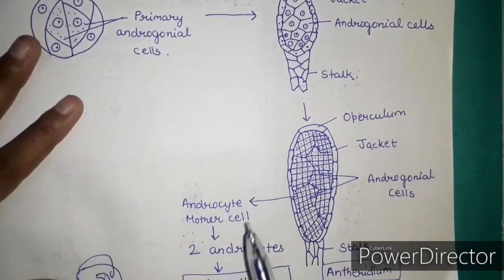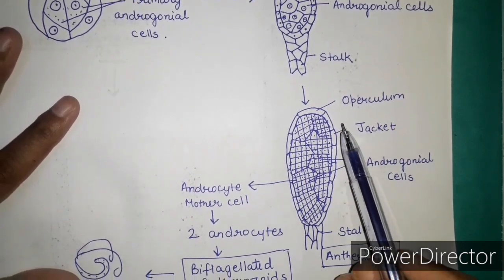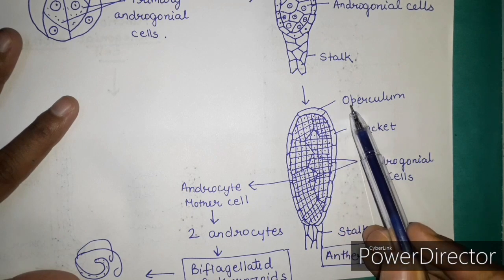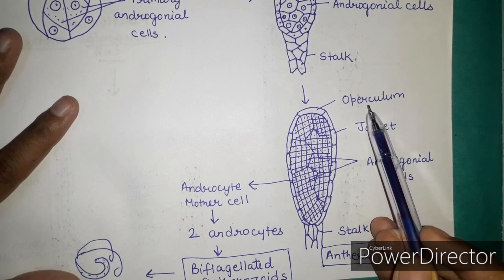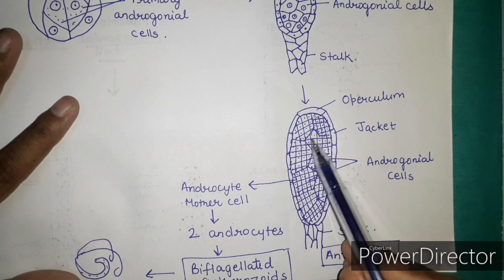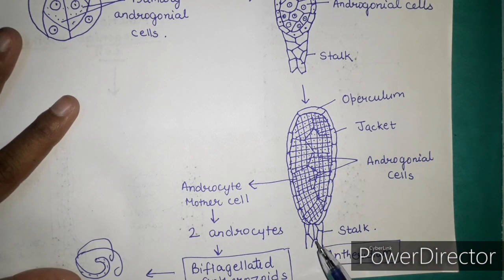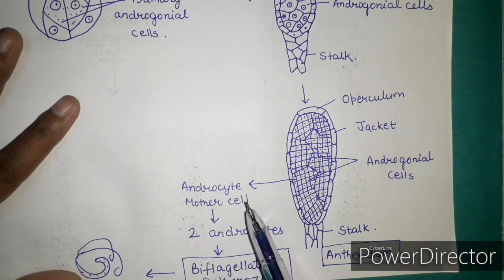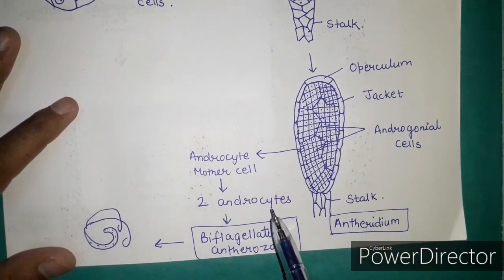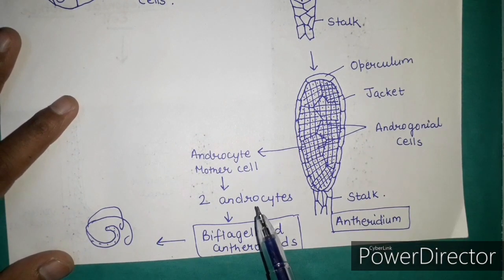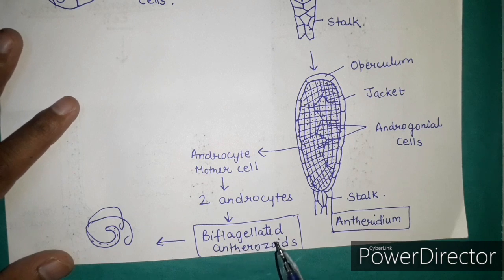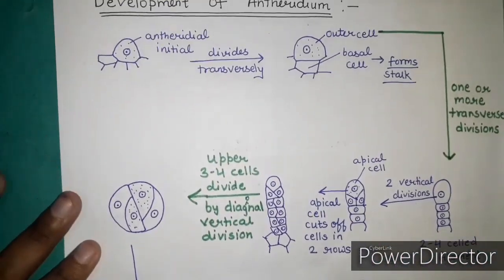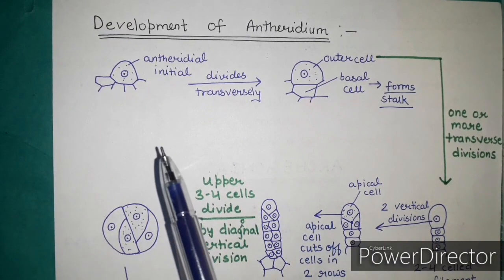The overall structure of the anthridium consists of a jacket, with the apical cell forming the operculum that helps in liberation of antherozoids. In the center are the androgonial cells, and at the base is the stalk. The androgonial cells contain androcyte mother cells, each containing two androcytes. These androcytes undergo division to form biflagellated antherozoids, which are then liberated.